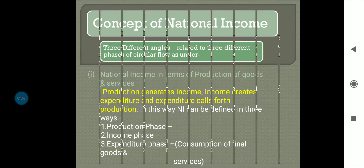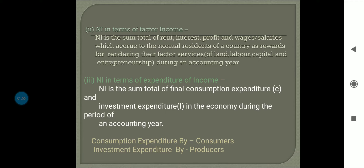Second, national income in terms of factor income, i.e., the income distribution method. National income is the sum total of rent, interest, profit, and wages or salaries which accrue to the normal residents of the country as rewards for rendering their factor services of land, labour, capital, and entrepreneurship during an accounting year. So when calculating national income from the income distribution method, it is nothing but the factor income accruing to the factors of production.